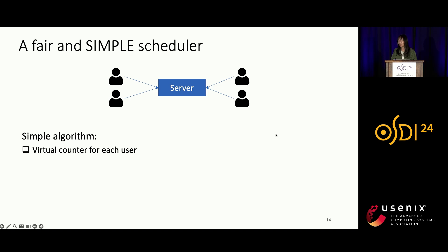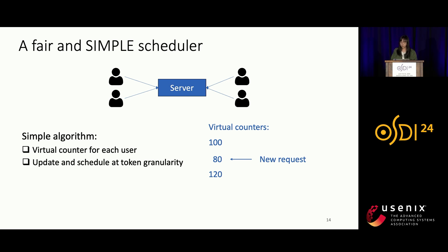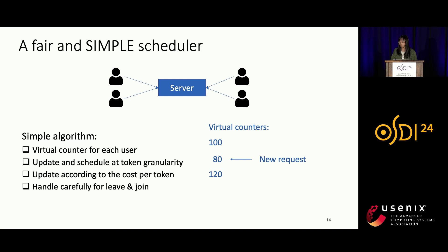The scheduler is actually simple — and I want to highlight that simplicity means fairness is not a big overhead and can be easily added to existing serving systems. Every user has a virtual counter. Whenever scheduling, we schedule the user with the lowest counter first. Counters are updated at the token granularity according to cost per token, allowing flexible cost definitions. When a user leaves for a while and comes back, we address this by elevating their counter to the lowest of the currently active counters.